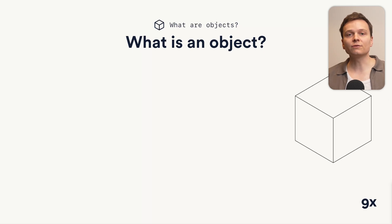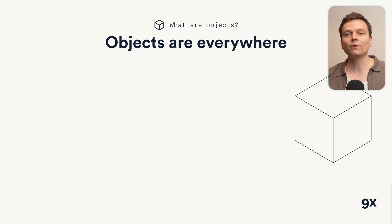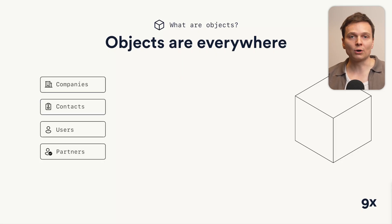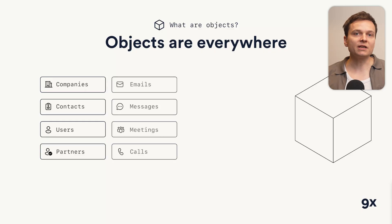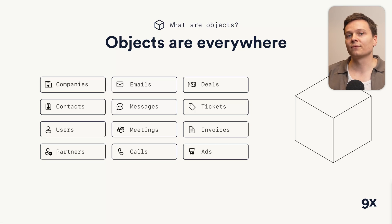In programming, objects are basically containers for data that have certain properties and behaviors. Think of them as digital representations of real-world items. Objects are involved with absolutely everything we do with software every day. To represent our relationships with people and organizations, we work all day with companies, people, users, or partner objects. To track our conversations, we use emails, messages, meetings, call objects. To manage our work on a daily basis, we use deals if we work in sales, tickets if we work in customer support, invoices if we're part of the finance team, ads if we are in the marketing team. They're here to structure the information we work with when we use software.